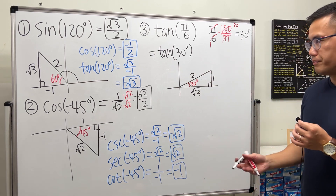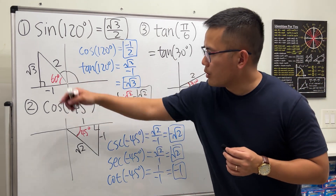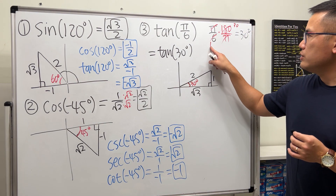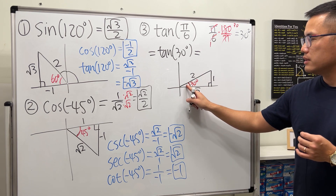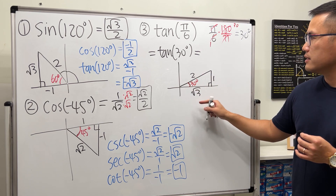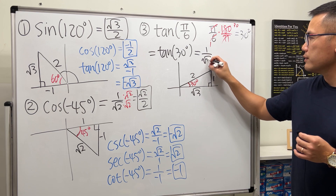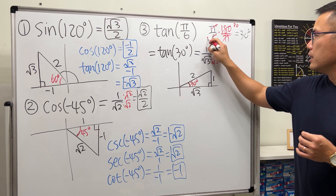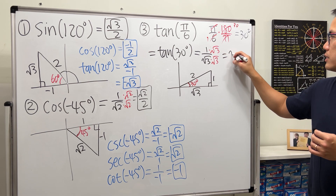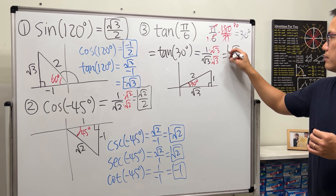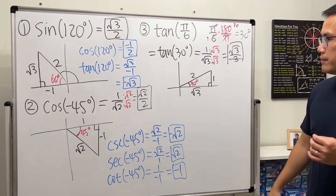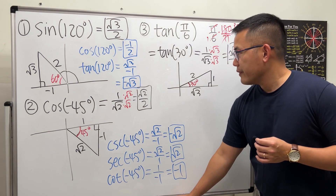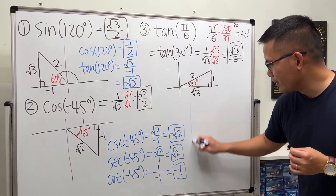The shorter side has ratio 1, the longer side is √3, and the hypotenuse is 2. Make sure you remember these two special triangles. Tangent of 30 degrees is opposite over adjacent: 1 over √3. Multiply top and bottom by √3 to rationalize, and we get √3 over 3.